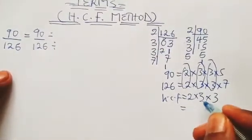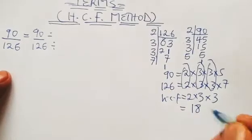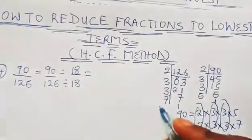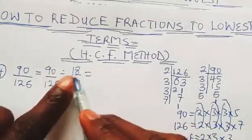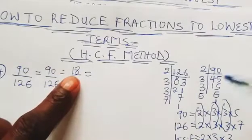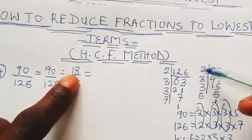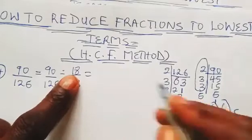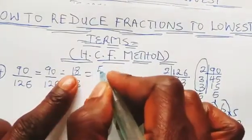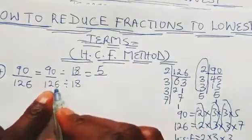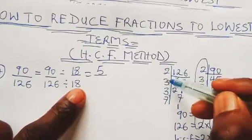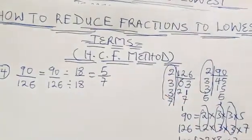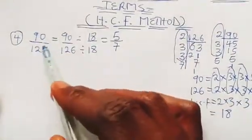We multiply out the common factors: 2 × 3 × 3 = 18. So the HCF is 18. We use 18 to divide both numbers. For 90 divided by 18: multiplying 2 × 3 × 3 = 18 and circling it, we are left with 5. So 90 ÷ 18 = 5. For 126 divided by 18: circling the 18, we are left with 7. So 126 ÷ 18 = 7. This HCF method really helps us simplify larger fractions like this.